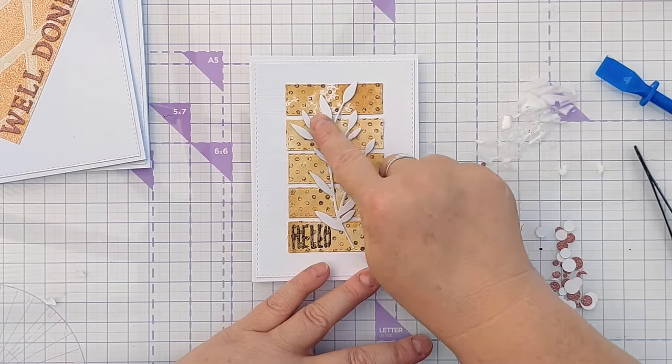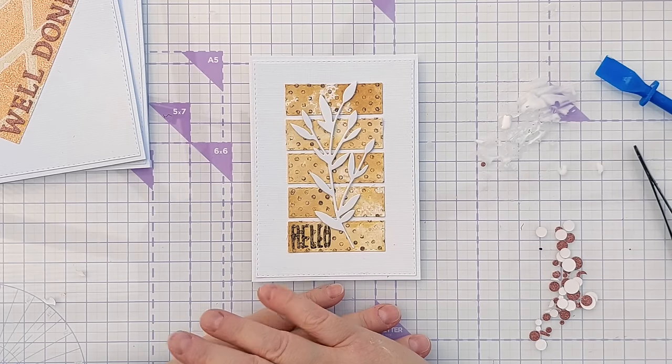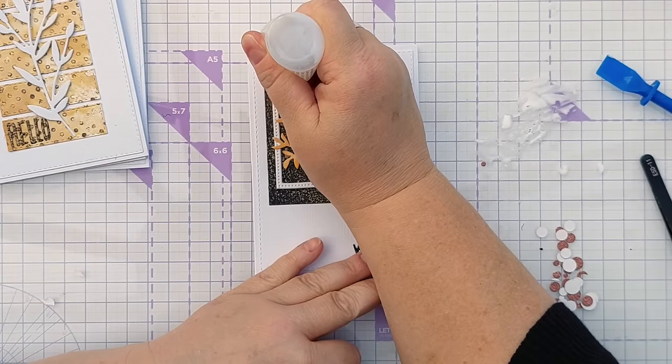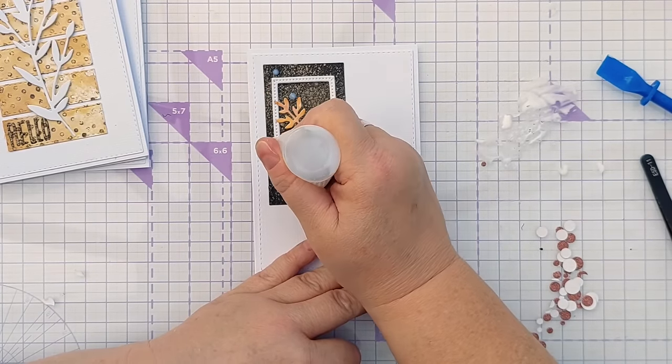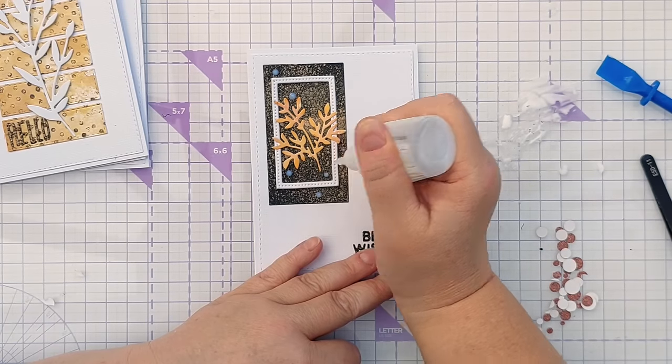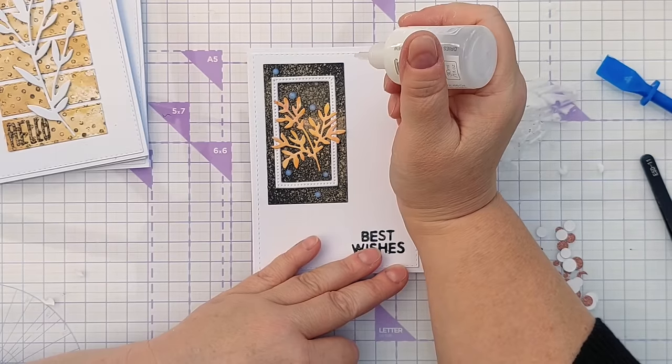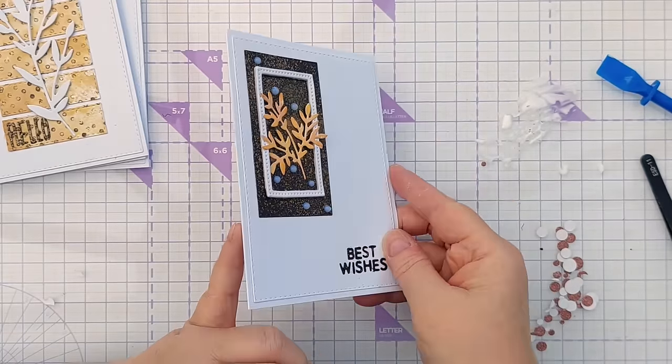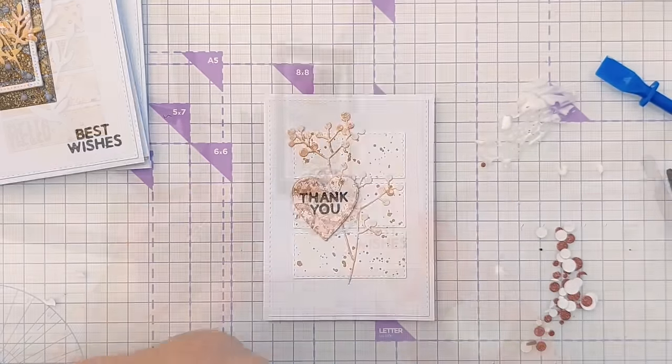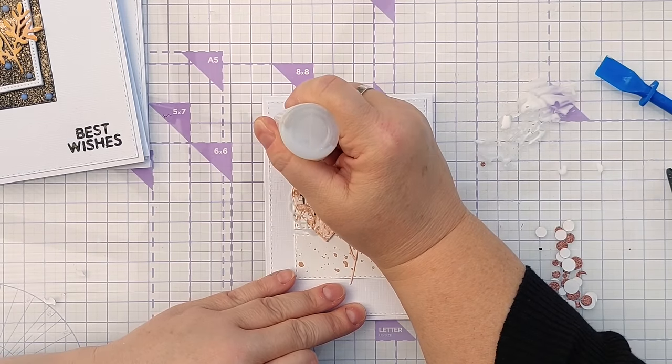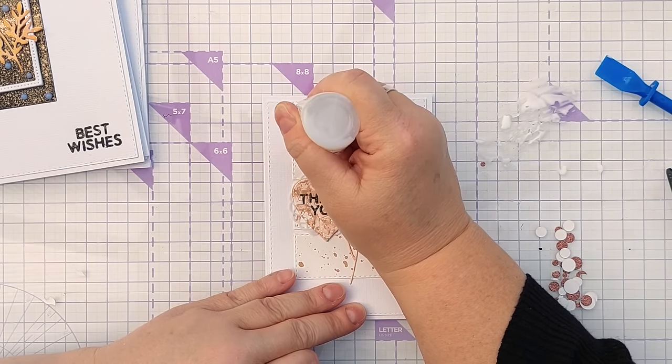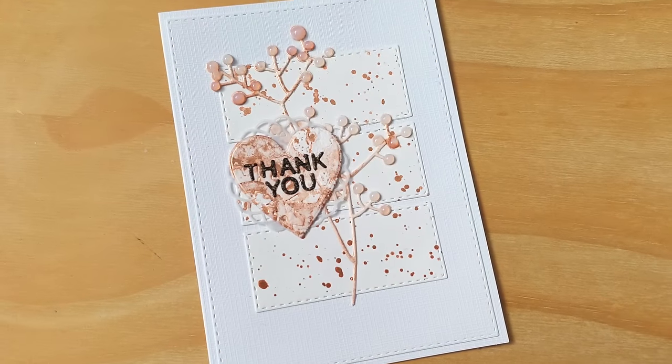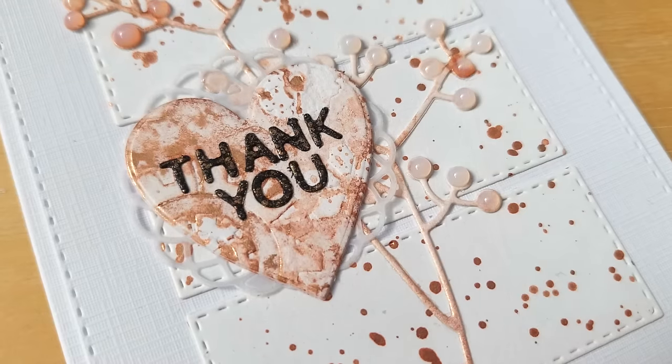I'm kind of tempted to maybe cover this whole die cut in glossy accents so it's shiny, but I'll have a think about that. I don't think that needs anything else adding to it. This one I'm just going to add a few morning dew nuvo drops. These come out cloudy but they will dry clear, so just a smattering around like that. They'll almost be invisible by the time they've dried, but they'll catch the light as you tilt the card. And again, because these are so lovely and round, the leaves or berries or whatever they're meant to be, I'm going to add a morning dew nuvo drop to each one.